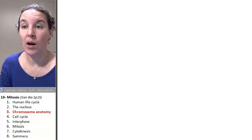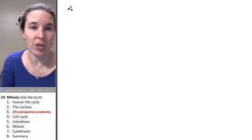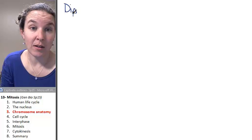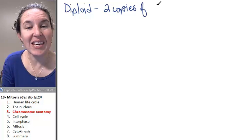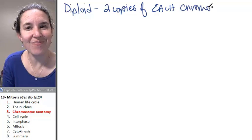First of all, I'm telling you right now, and I've already told you, we're diploid. And what does that mean? It means you have two copies of each chromosome.